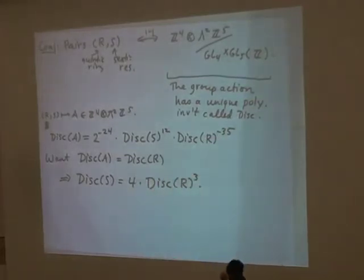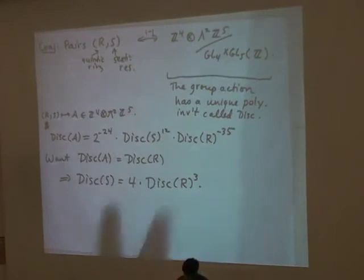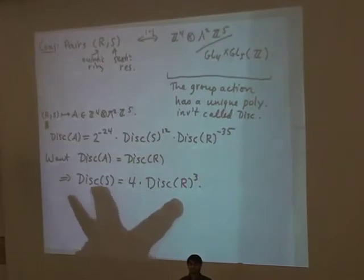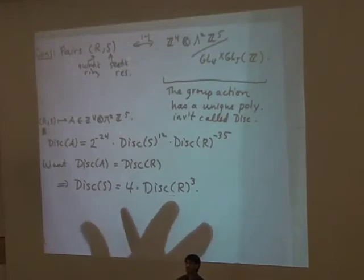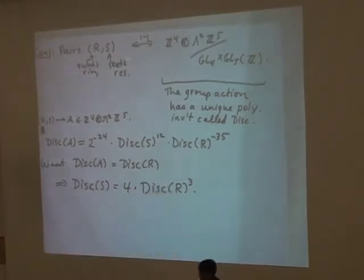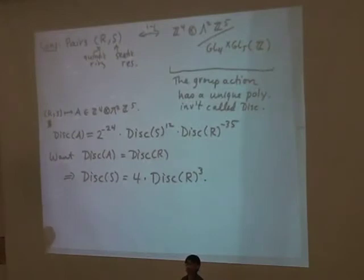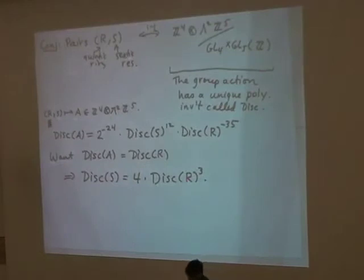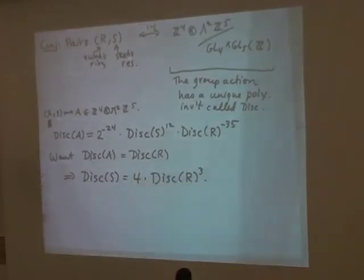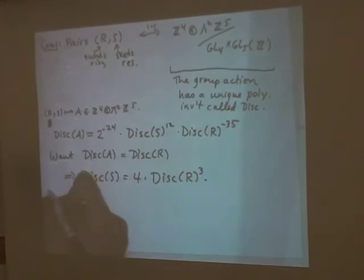This is different from the cubic and quartic cases, where the discriminant of the resolvent ring equaled the discriminant of the original ring. Here, the discriminant of the resolvent ring is 4 times the cube of the discriminant of the quintic ring. This made me stuck for a long time because I thought discriminants always had to be the same, but after working on it, this is the natural condition that comes out.